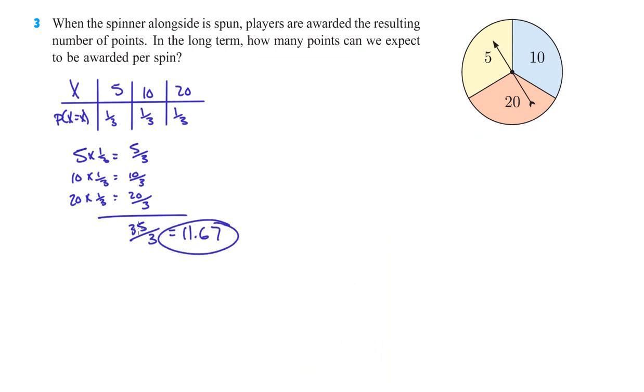That gives us 11.67 as the expected value. I like 11.67 a little better than 35 over 3 — it makes more sense to me. But either one would be totally fine.